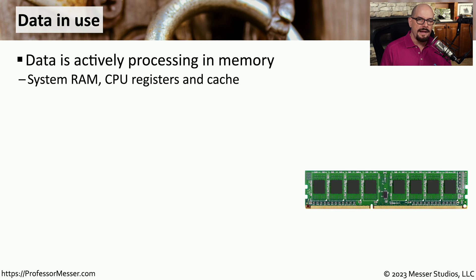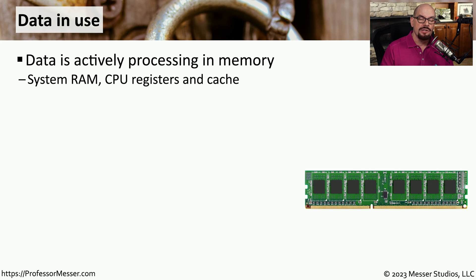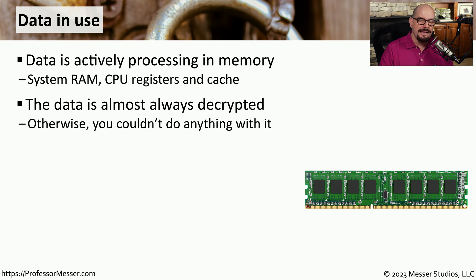To work with data inside our computers, we pull data from a storage device such as a hard drive or SSD, bring it into memory, and manipulate it using the CPU. When data is in the memory of your system or being actively processed inside your CPU, we refer to that as data in use. If you look at data inside your RAM or CPU, it is almost always in a decrypted or non-encrypted form.